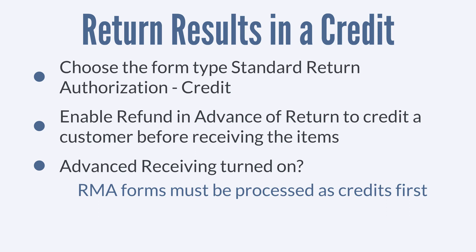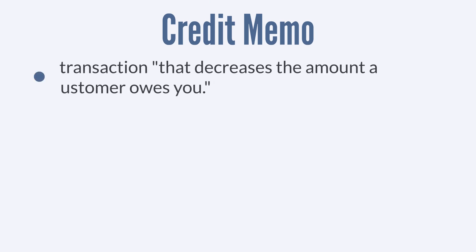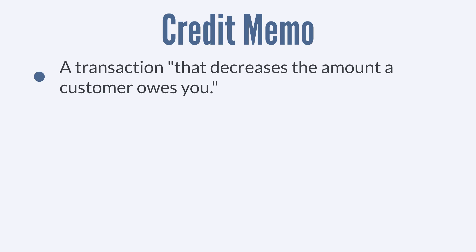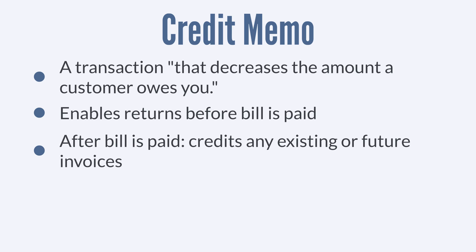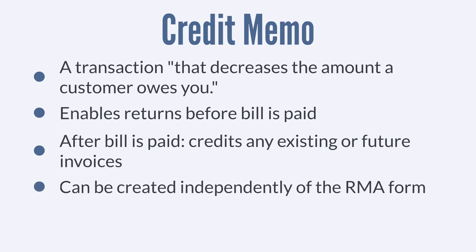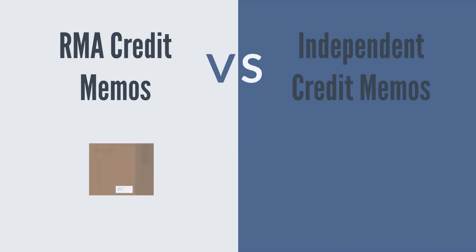When an RMA form results in a credit, NetSuite creates a customer credit memo. According to SuiteAnswers, a credit memo is basically a transaction that decreases the amount a customer owes you. Credit memos allow you to complete a return before the customer has even paid their bill, and if a customer has already paid their bill, credit memos allow you to apply a credit to any of that customer's existing or future invoices with your company. Customer credit memos can be created independently from a return authorization form, but they perform slightly differently from credit memos generated as a result of a return authorization form. Perhaps the most significant difference is that credit memos connected to an RMA form will not affect your inventory, while independent credit memos do affect inventory.